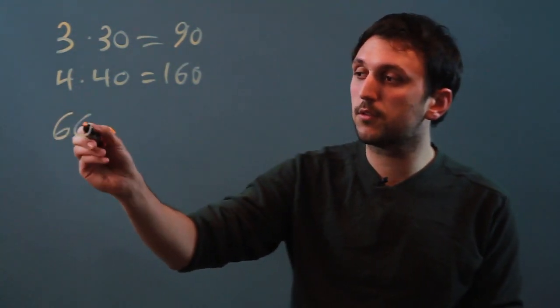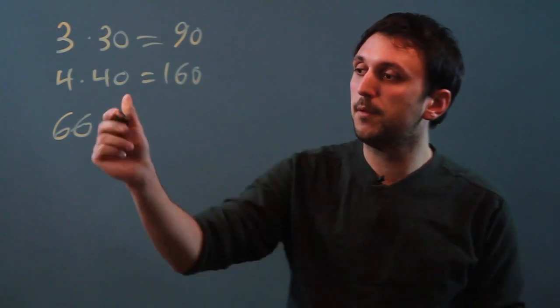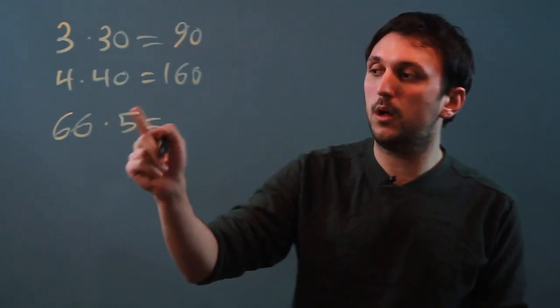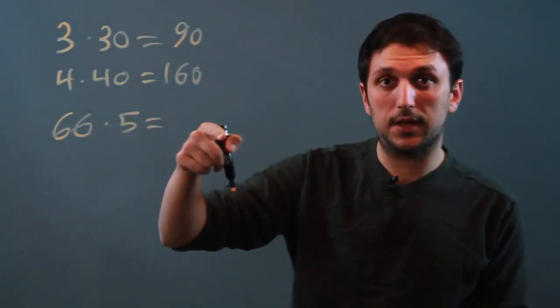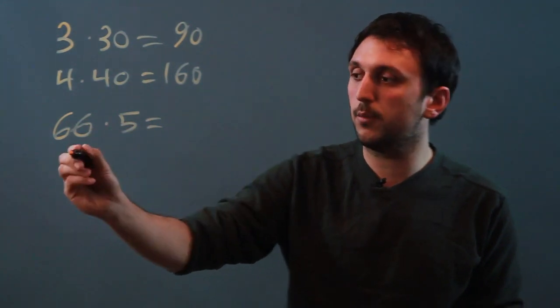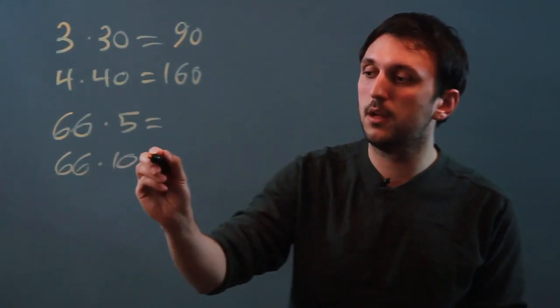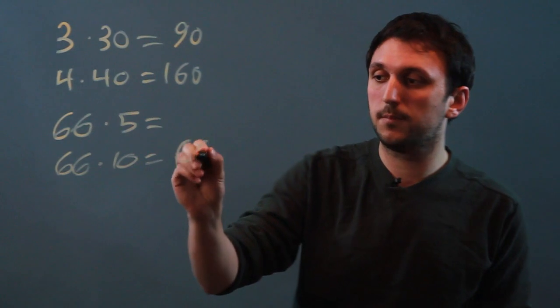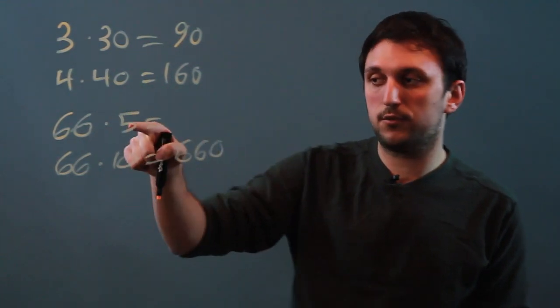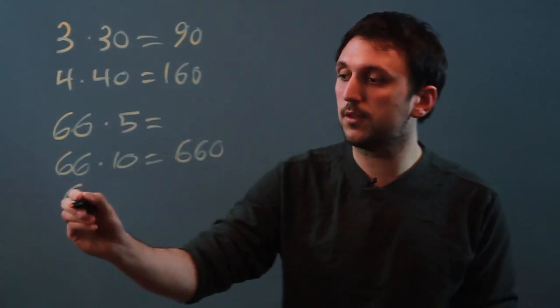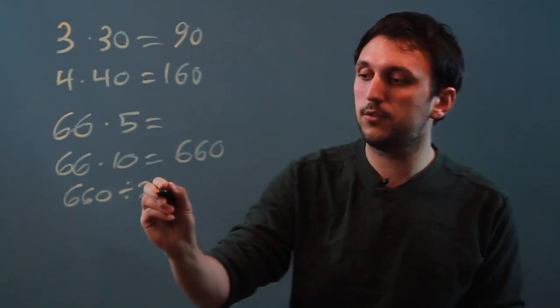So if we say 66 times 5, well, instead of just trying to solve that on a calculator or doing it on paper, we can say what's 66 times 10? Well, that's easy. That's 660. And then 10 is just 5 times 2. So what's 660 divided by 2?